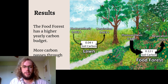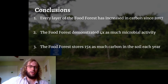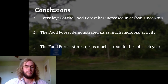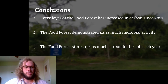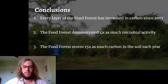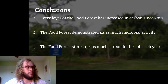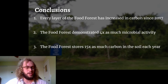These results brought me to my conclusions. Firstly, every layer of soil in the food forest has increased in organic carbon since measurements were taken in 2017. Secondly, the food forest demonstrated four times as much microbial activity. And thirdly, the food forest can store 15 times as much carbon in its soil each year compared to a lawn. So these were my final numbers that kind of represent the food forest and its different habits and activities.